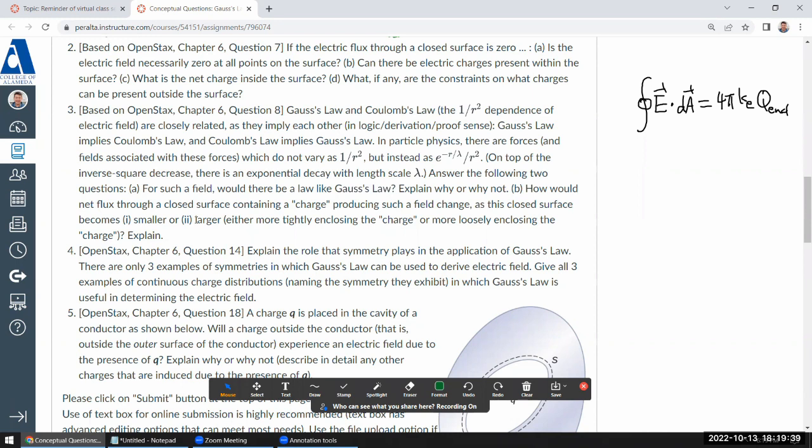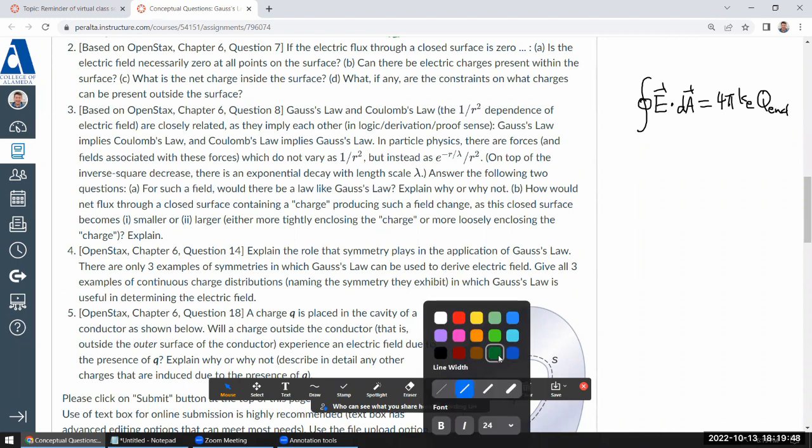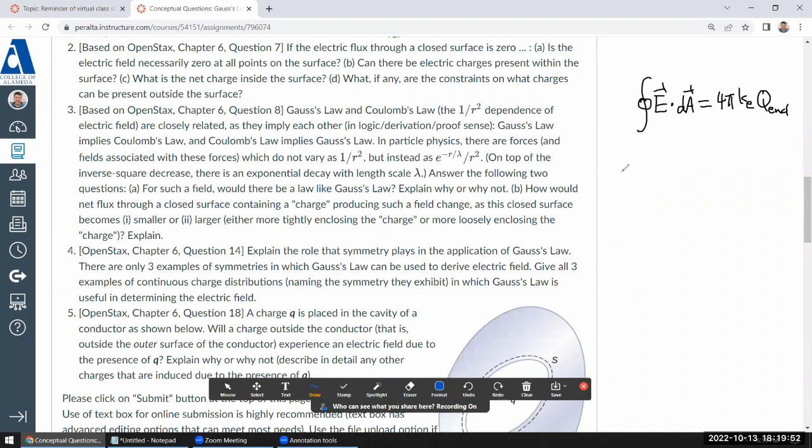Explain why or why not. How would the net flux through a closed surface containing a charge? It's become smaller or I think this might be useful to just to demonstrate what that looks like. So imagine this a hypothetical scenario where you have some kind of a field. Oh, I'm trying to come up with a letter where we haven't used. Let me use lowercase. Some kind of a field, which is going to be kind of like electric field in that it'll be a function of distance and it'll be like a central field. So I don't have to worry about different angular thing.